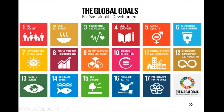Here we have the 17 SDGs: number one, no poverty; number two, zero hunger; number three, good health and well-being; number four, quality education; number five, gender equality; number six, clean water and sanitation; number seven, affordable and clean energy; number eight, decent work and economic growth; number nine, industry, innovation and infrastructure; number ten, reduced inequalities; number eleven, sustainable cities and communities; number twelve, responsible consumption and production; number thirteen, climate action; number fourteen, life below water; number fifteen, life on land; number sixteen, peace and justice; and number seventeen, SDG partnerships for the goals.